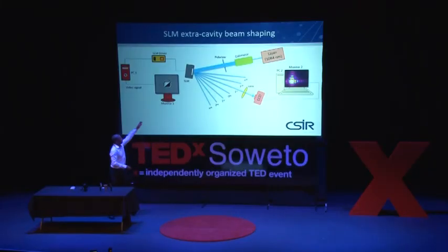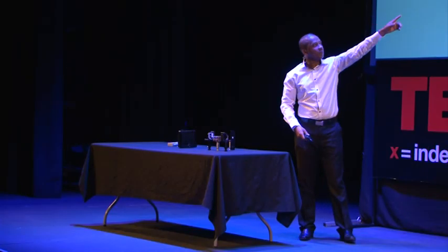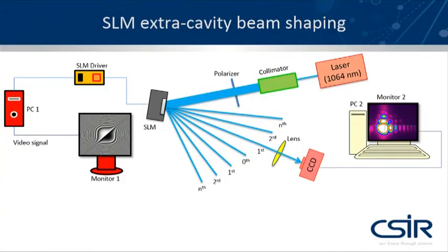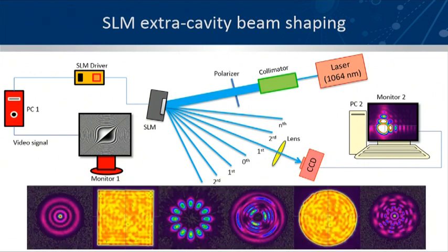Whatever you put in here, you'll detect on the other side only that order-one beam, not everywhere. And you lose a lot of power, and a whole lot of other issues come with it. So the idea is that this is the kind of shape that you can make. It's like you have your laser, it shines onto the LCD, you pick up that beam, and you can do a whole lot of different shapes.